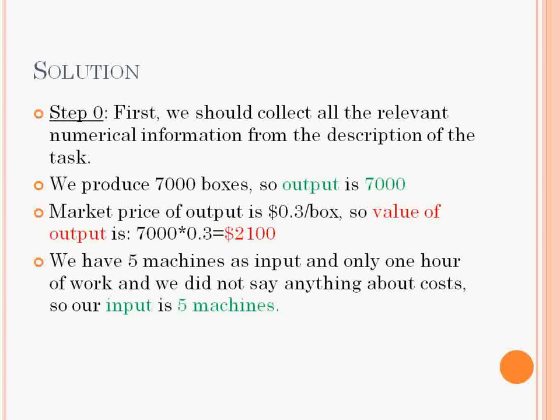Before solving the problem, we should always collect the relevant information from the text. Output is 7000 pieces, which has a value of $2,100. You can calculate that by multiplying the quantity by the price per unit.